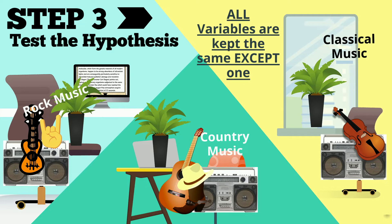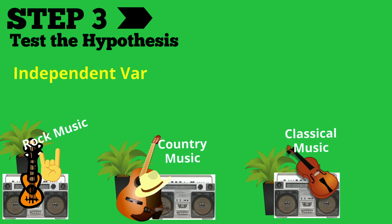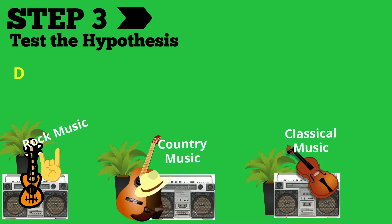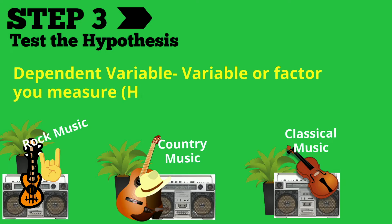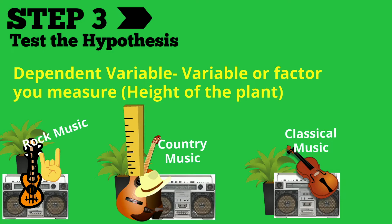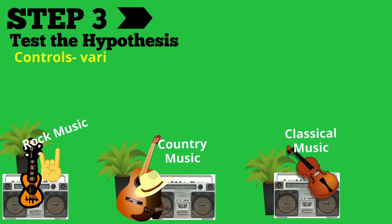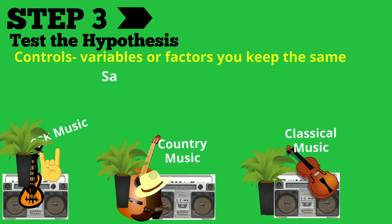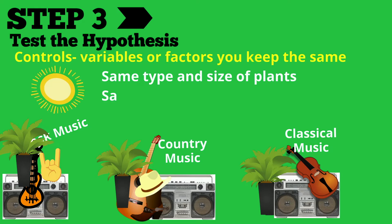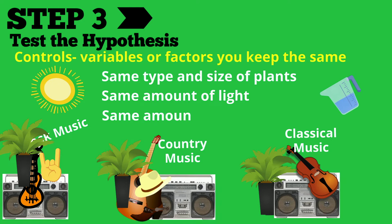Notice that all the variables are kept the same except one. The independent variable is the variable or factor you change, like type of music. The dependent variable is the variable or factor you measure, like the height of the plant. Controls are variables or factors you keep the same: same type and size of plants, same amount of light, same amount of water.